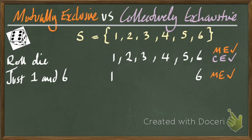How about collectively exhaustive? Well, I only threw a one and a six. How about the two, three, four, and five? So it is not collectively exhaustive.